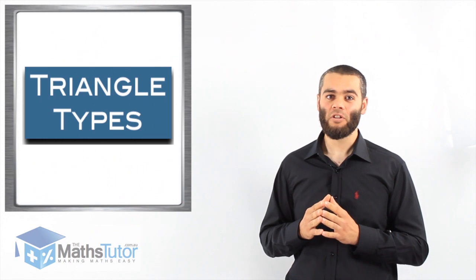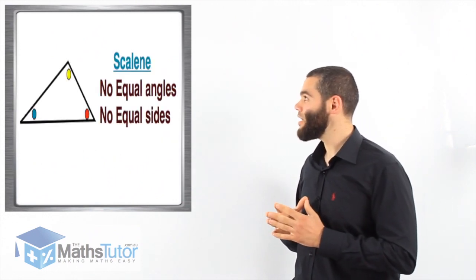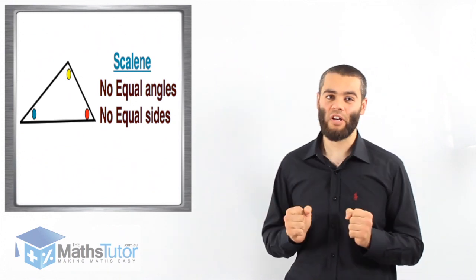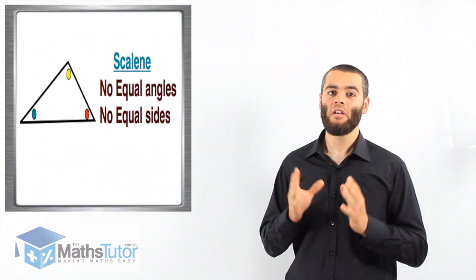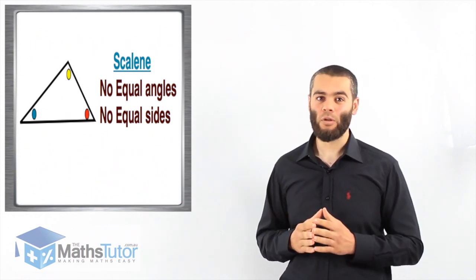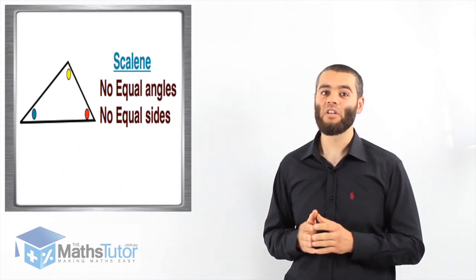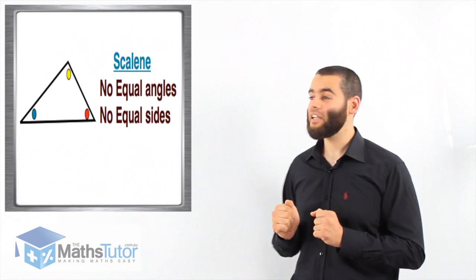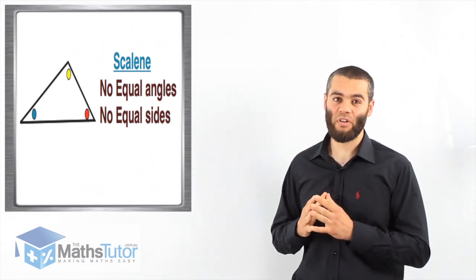Let's look at these triangles one by one. The first type we're going to look at is the scalene triangle. The scalene triangle has two main features: it has no equal sides and no equal angles. So all the sides in a scalene triangle are different and all the angles are different. That's why they're marked in different colors.